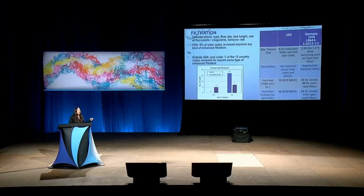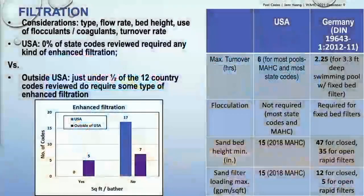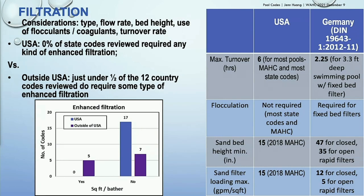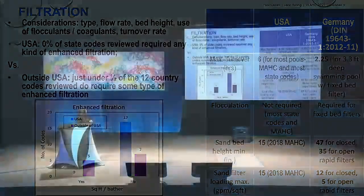On filtration — this is based on pool codes but relevant to you. In the US, cryptosporidium is a huge problem in terms of disease. Since it can't be killed with chlorine, filtration is one of the biggest opportunities we have in the pool and spa industry to guard against it. Enhanced filtration can include the use of coagulants, flocculants, or a filter with a higher bed height — anything beyond a very low-grade sand filter qualifies as 'enhanced filtration' for this purpose. Of the states I looked at, zero had any enhanced filtration requirement. That's a huge opportunity we're missing. Outside the US, just under half of the countries I examined had this kind of requirement. For the most part, float tank equipment tends to have pretty good filters.